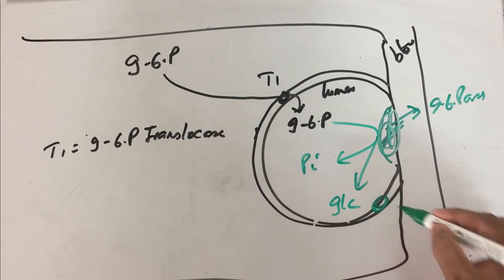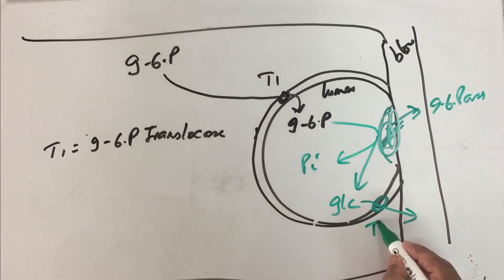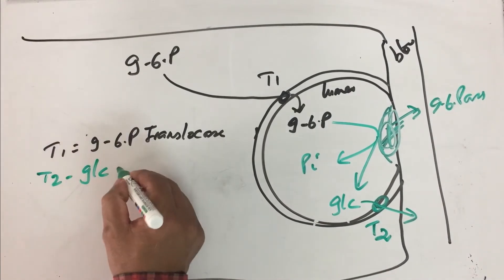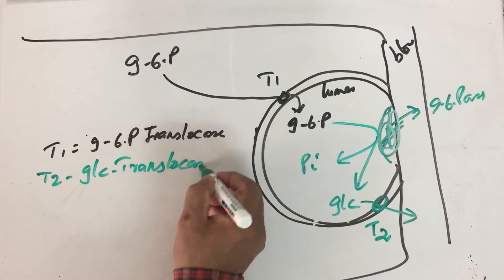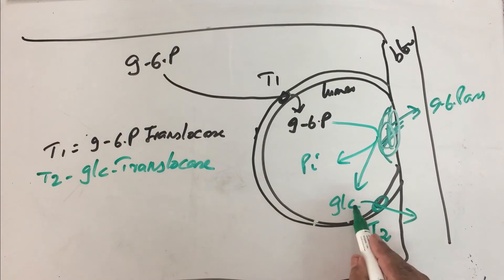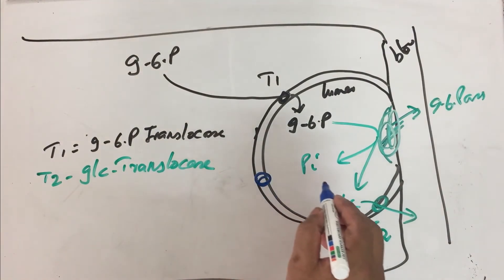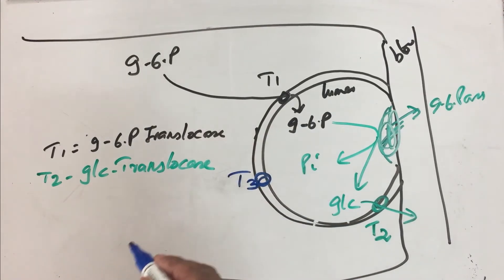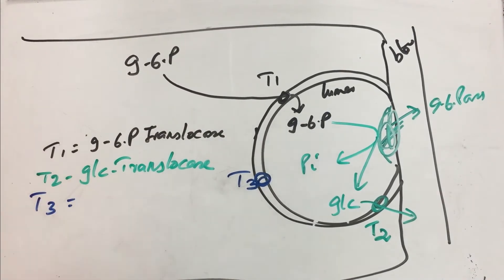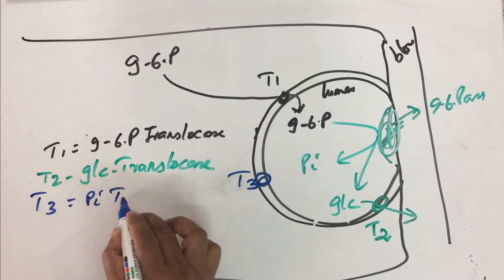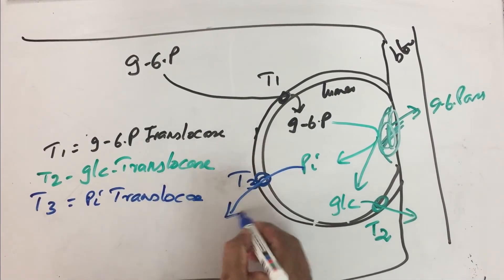Now the glucose formed is immediately transferred back into blood with the help of a protein known as T2. T2 is a glucose translocase. T2 helps in transporting glucose. It is not retained inside the cell. It is transported immediately into blood to maintain blood glucose level. What happens to PI? This inorganic phosphate, there is another translocase, T3. T3 is PI translocase. This will transfer inorganic phosphate back into cytoplasm.